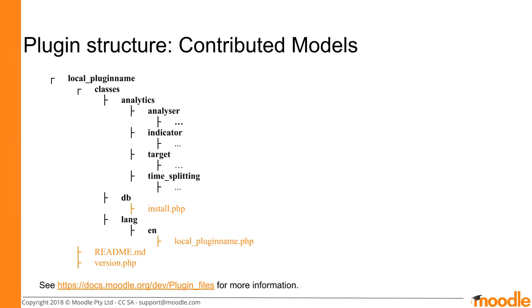While the classes in Core are worth looking at for examples, most external developers will be contributing code in the form of a local plugin, as shown here. In addition to the code for the model components, the install.php, local_pluginname.php with your plugin name, readme.md, and version.php are required.